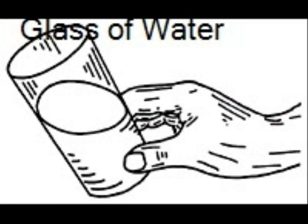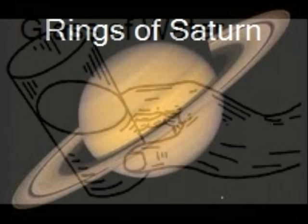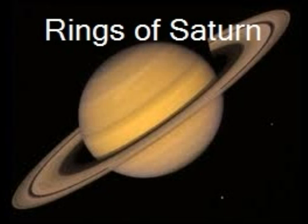Glass of Water: Tilt a glass of water and the surface of the liquid acquires an elliptical outline. Rings of Saturn: Another example of an ellipse are the rings of Saturn, which are elliptical in shape. The rings of Saturn are the most extensive planetary ring system of any planet in the solar system. They consist of countless small particles ranging in size from micrometers to meters, that form clumps which in turn orbit above Saturn.